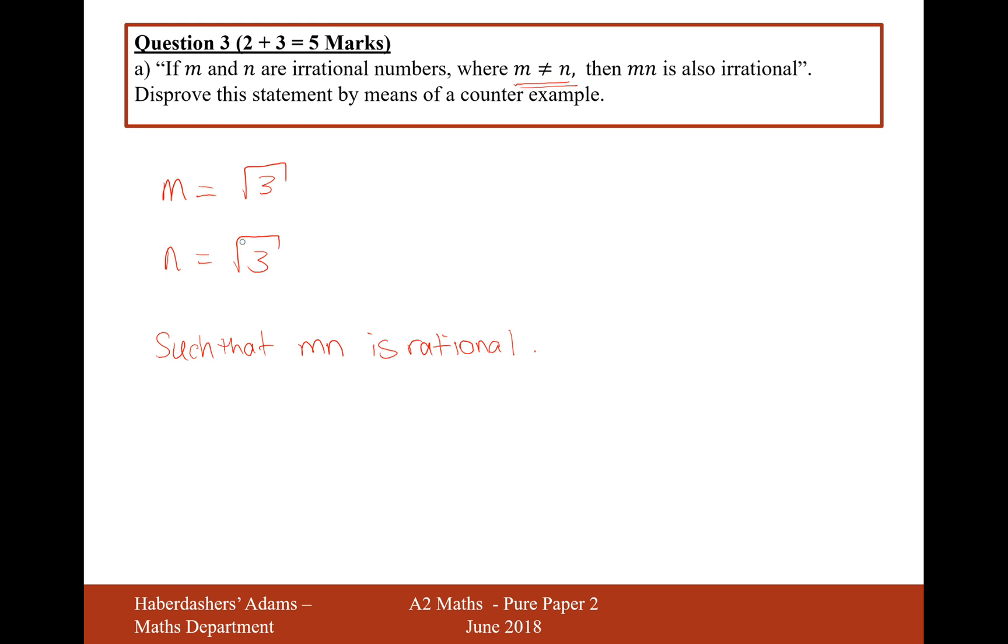What we'll have to do is we'll have to change this to something different. What about if we change the N value to the square root of 27? What will happen then is I'll do 3 times 27. M times N in this case will equal the square root of 81, which will equal 9, which is rational.